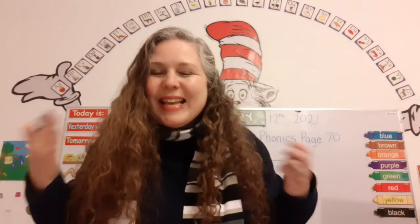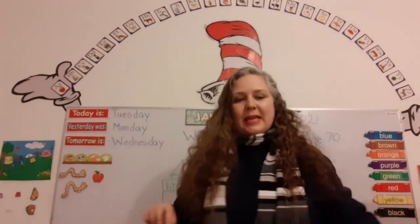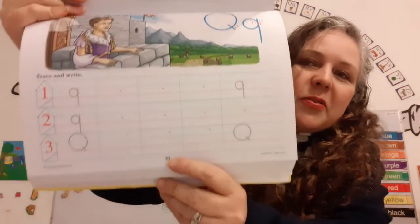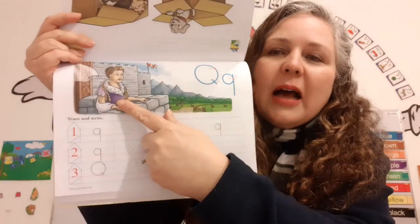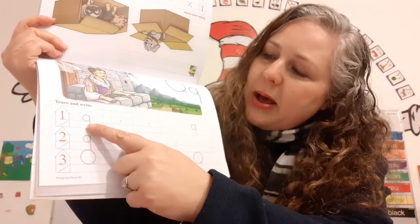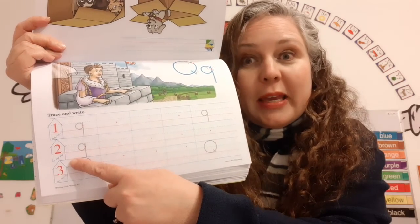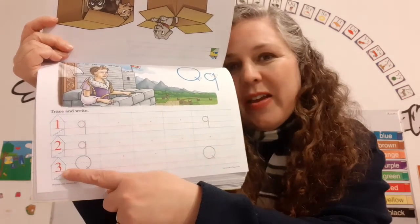You know all the letters in the alphabet — you guys are amazing! Now it says Writing with Phonics, page 70. Here's our Writing with Phonics book. It's a 70 family, so it begins with seven. Look, there's a queen! It says trace and write. On line one, we're going to trace and write the lowercase q. On line two, trace and write the lowercase q again. On line three, trace and write the capital Q. Make sure to do it very nicely and neatly. You guys are amazing — I'm so proud of you! You learned how to write all the letters in the alphabet. You guys are awesome.